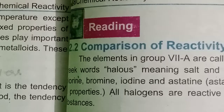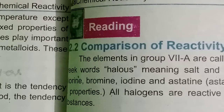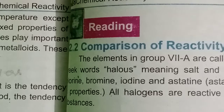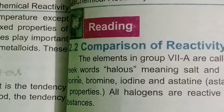They have 7 electrons in their valence shell — all of these — because they are present in group 7A, and you know that the group number indicates the number of electrons in the outermost shell. So they need 1 electron to complete their octet.